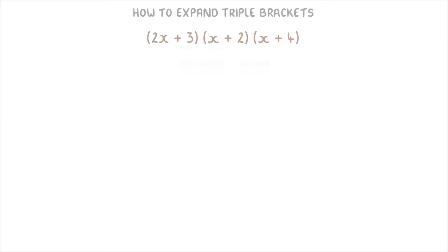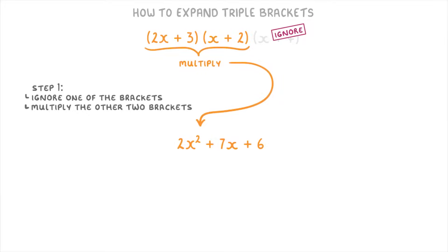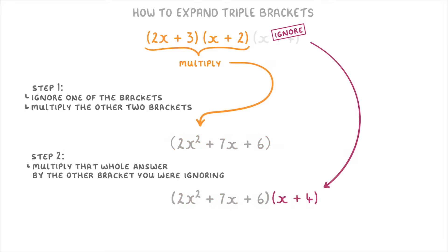Before we go through it in detail, let's just do a quick overview of how it works. The first step is to ignore one of your three brackets and just multiply together the other two so that you end up with a combined bigger bracket. Then once you've done that, the second step is to multiply that whole answer by the other bracket that you were ignoring. So you're basically just doing two double bracket questions one after the other.